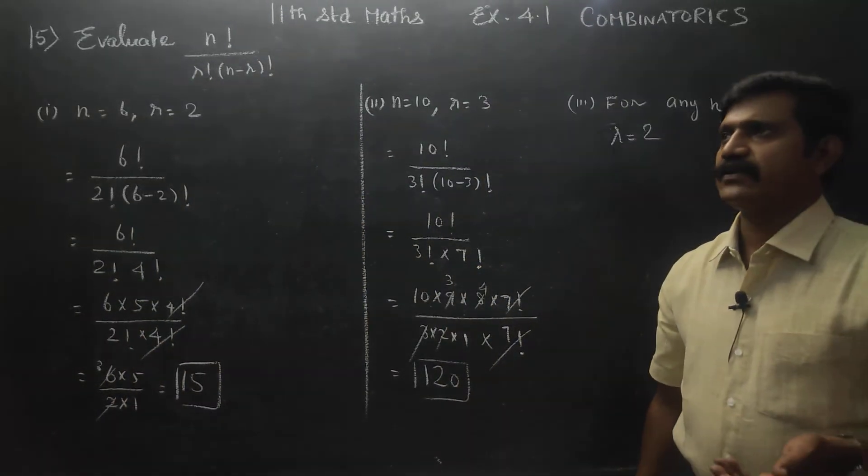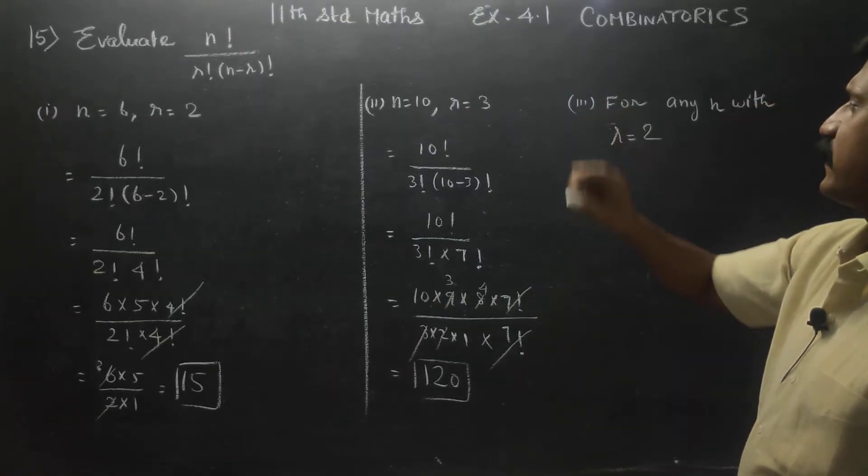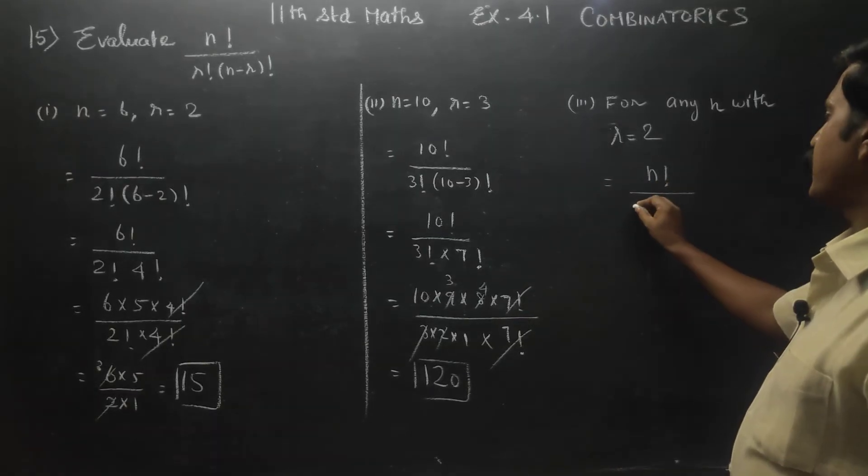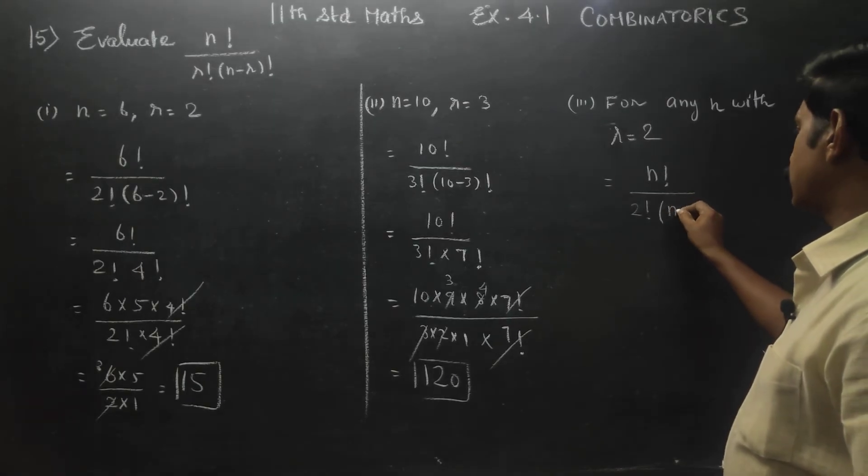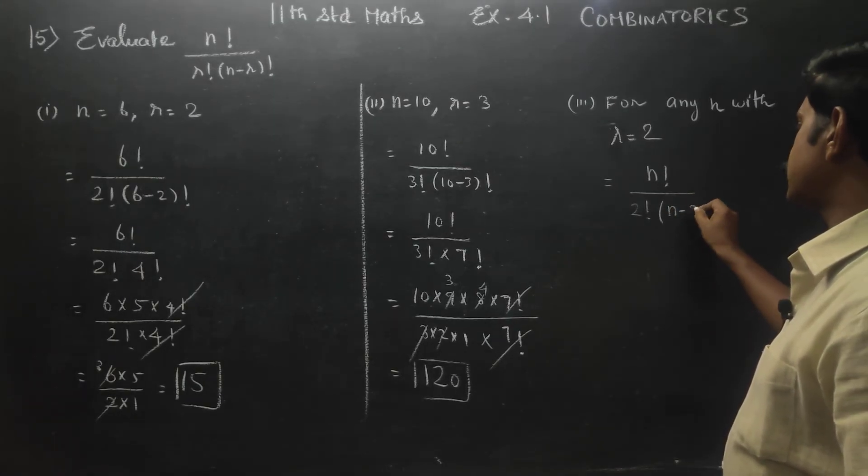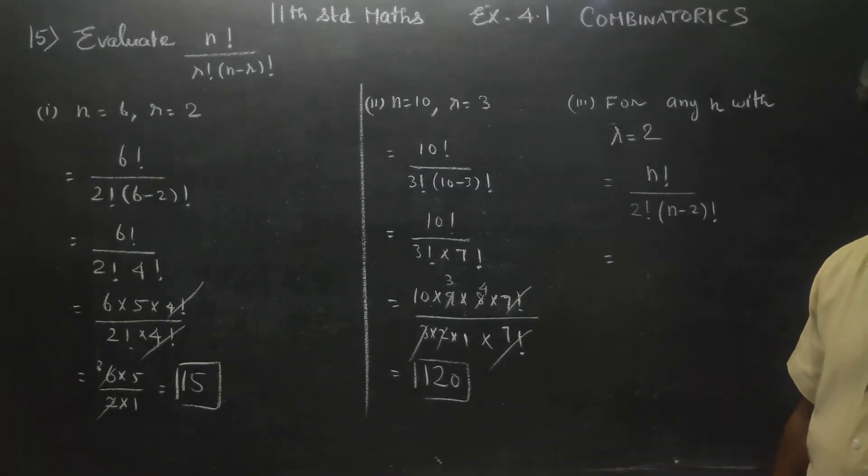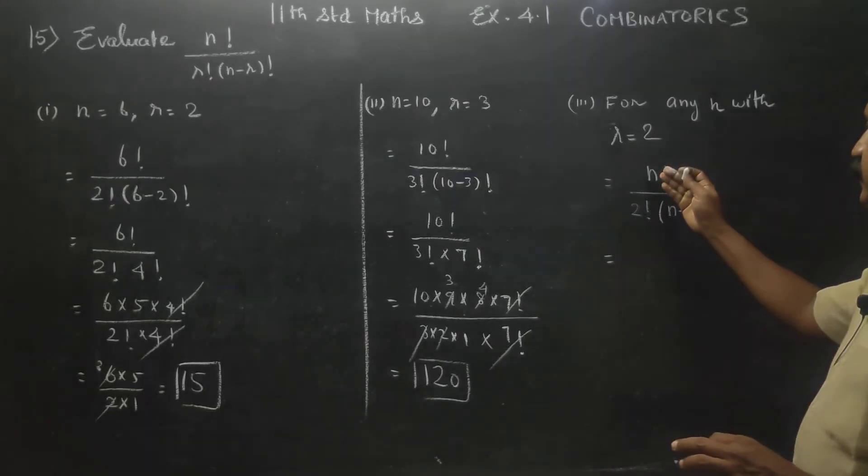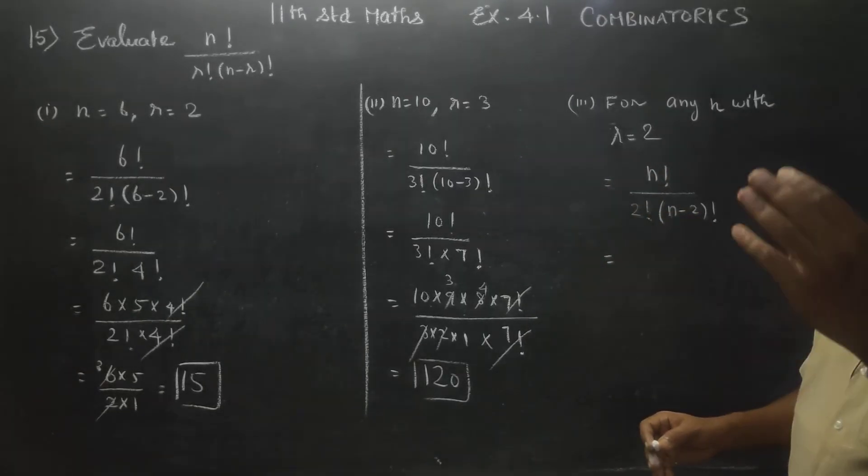For any n with r equals 2, n factorial by r factorial, 2 factorial, n minus r, n minus 2, n minus 2 factorial. This will cancel, if you release, descending will come, 1 minus 1, n minus 1, n minus 1, n minus 1.